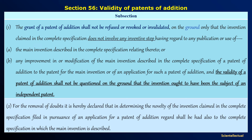Subsection 2: for the removal of doubts, it is declared that in determining the novelty of the invention claimed in the complete specification of a patent of addition, regard shall be had also to the complete specification in which the main invention is described. That is, the novelty of the invention described in the complete specification for the application of a patent of addition is assessed with regard to the complete specification of the main invention.